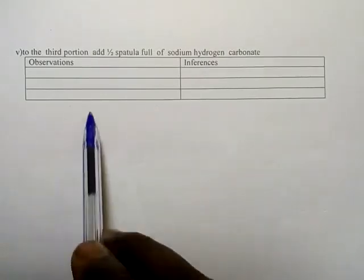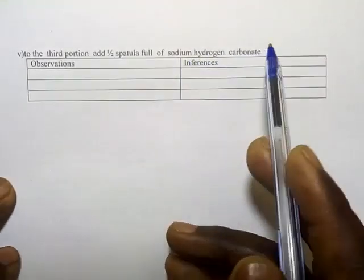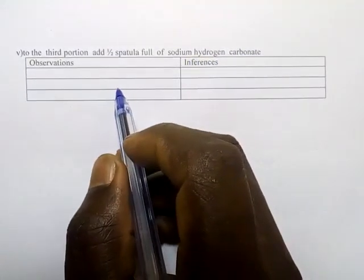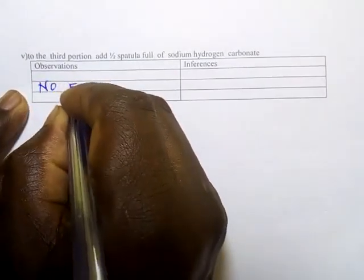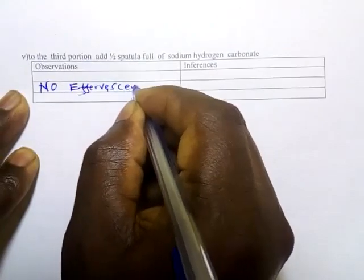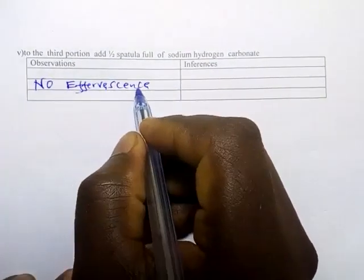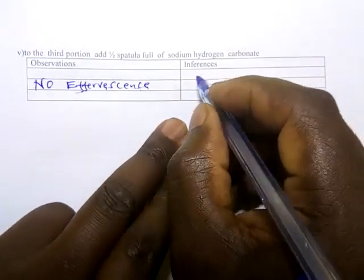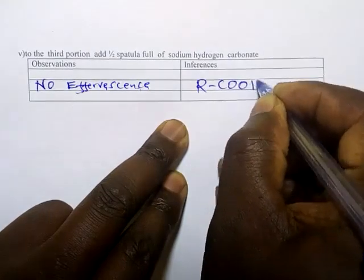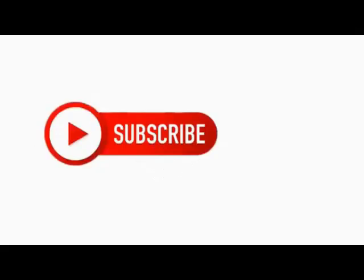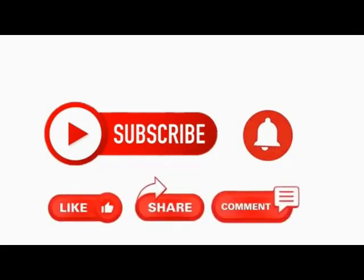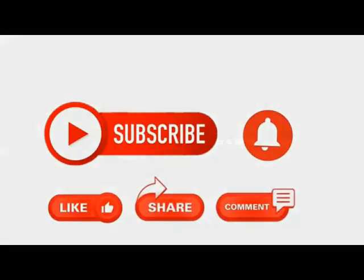Lastly, to the third portion add a half spatula of sodium hydrogen carbonate. Here we expect effervescence. If there is effervescence you tell us. So here no effervescence. If there is no effervescence it means that the organic acids are not there. So you write the functional group of organic acid is absent.